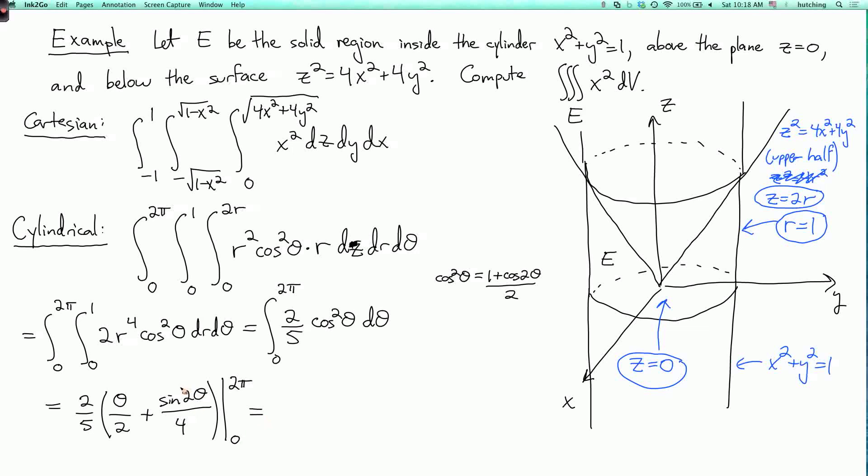So when I integrate this, I get 2 fifths times theta over 2 plus sine 2 theta over 4 evaluated at 2pi and 0. And the sine 2 theta term is going to give me nothing, because that's the same when theta equals 2pi and when theta equals 0. So I just have the theta over 2 term. So I have theta over 5 evaluated at 2pi and 0, so that just gives me 2pi over 5.